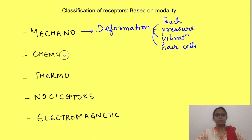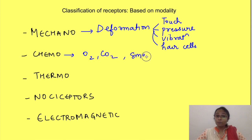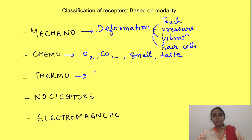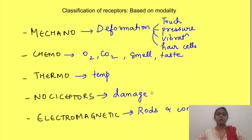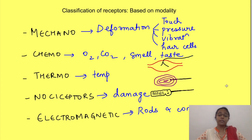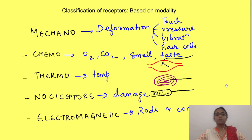Chemoreceptors detect changes in chemical energy, like oxygen and carbon dioxide concentration, as well as chemical compounds in food through smelling and tasting. Thermoreceptors detect changes in temperature. Electromagnetic receptors are photoreceptors — rods and cones — which detect different frequencies in the electromagnetic spectrum, while nociceptors detect physical and chemical damage. Different receptors detect different energies because sensory nerve endings are modified into many types; it is the design of the receptor and the channels present on it that determine which stimulus modality it will respond to.